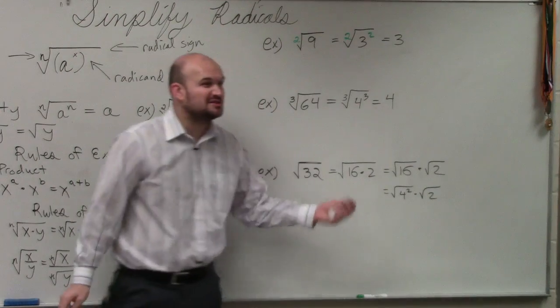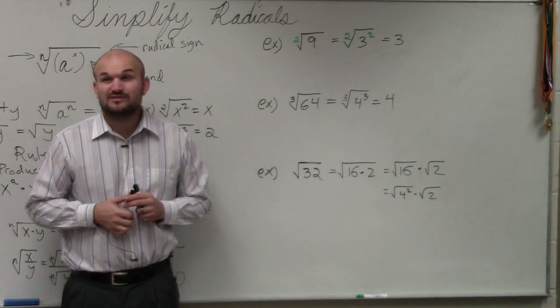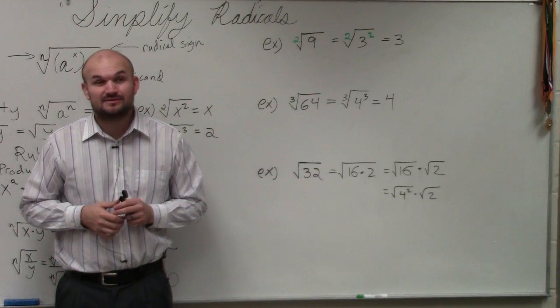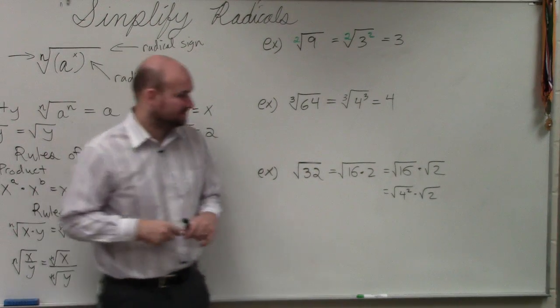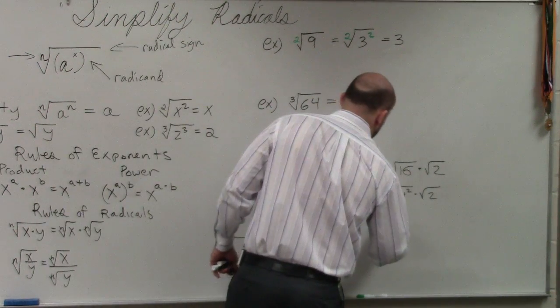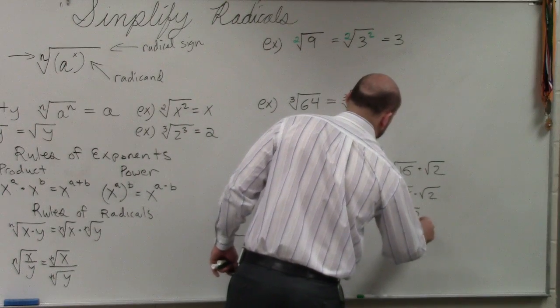However, can I rewrite 2 as a number squared? So I can't use the identity element on this. It stays. So my final answer is 4, square root of 2.